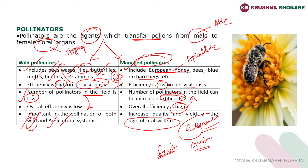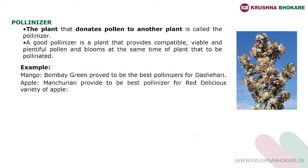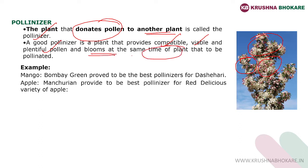Another concept which we often confuse with pollinator is the pollinizer. Pollinizers are the plants which donate pollen to another plant. The characteristics a pollinizer plant should possess: it should provide compatible, viable, and plentiful pollens. The pollen should be able to fertilize the ovaries of the species of interest, also called the commercial variety. These pollens should be viable and should not be sterile.